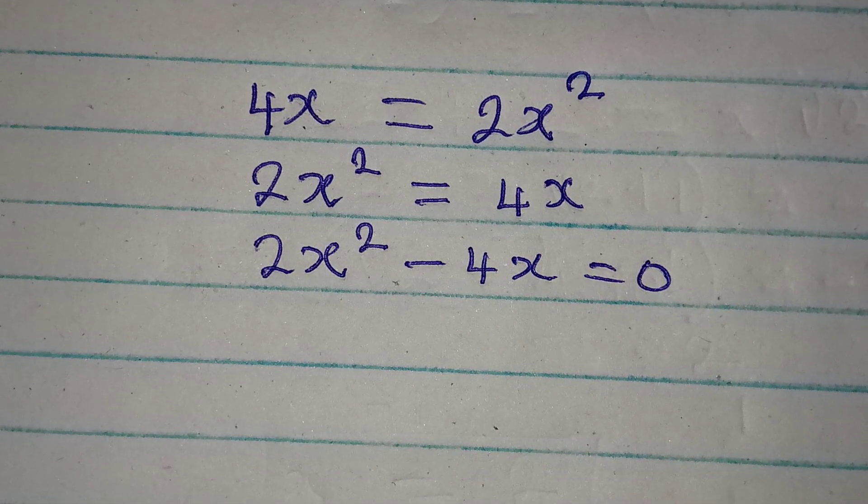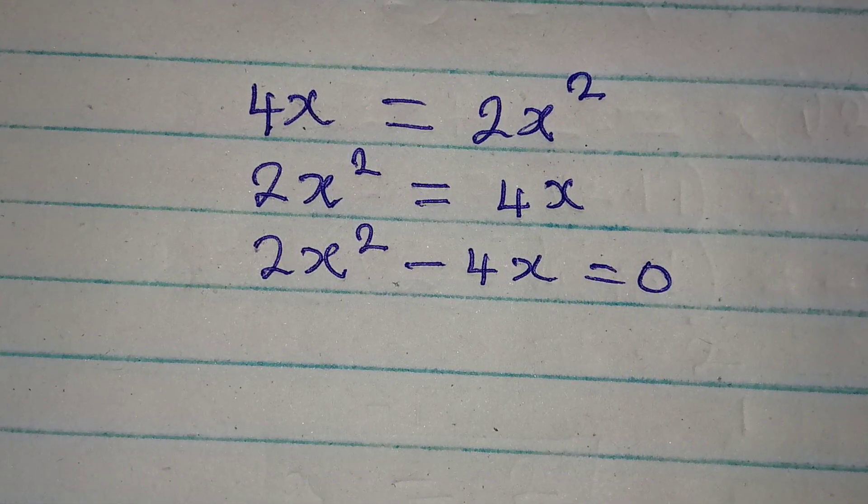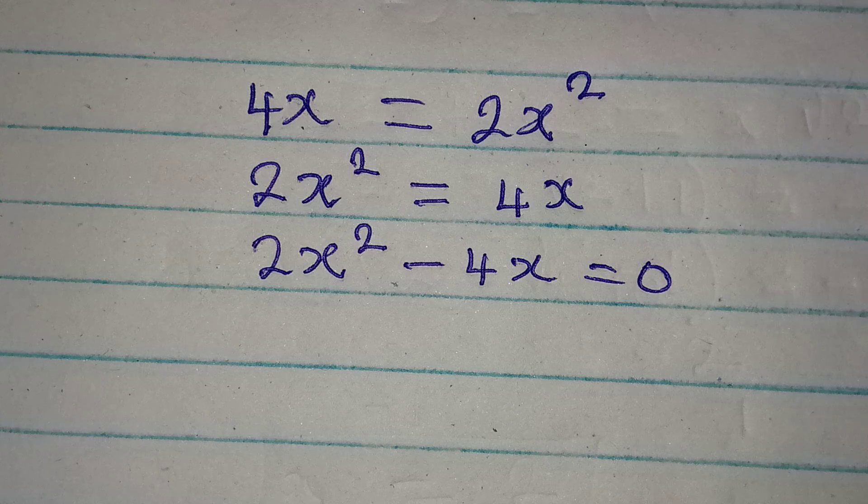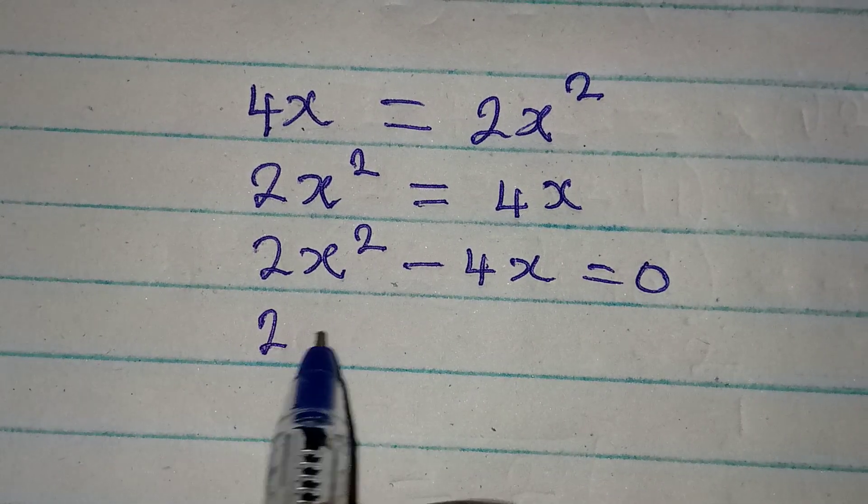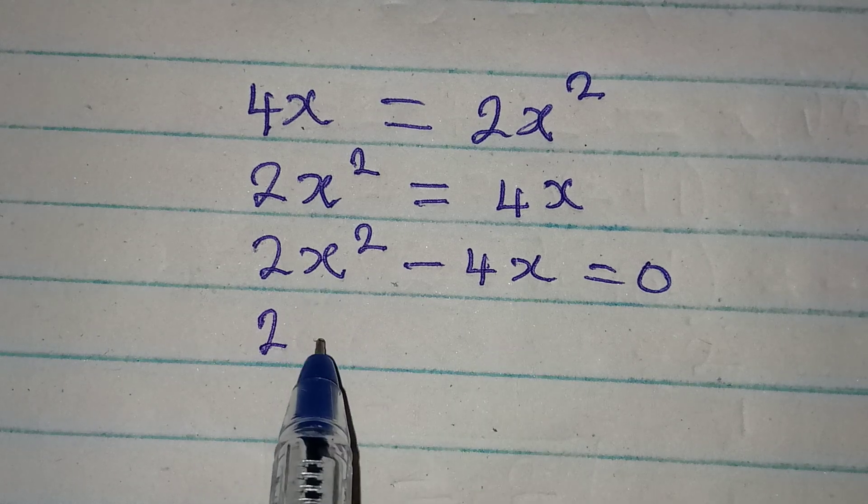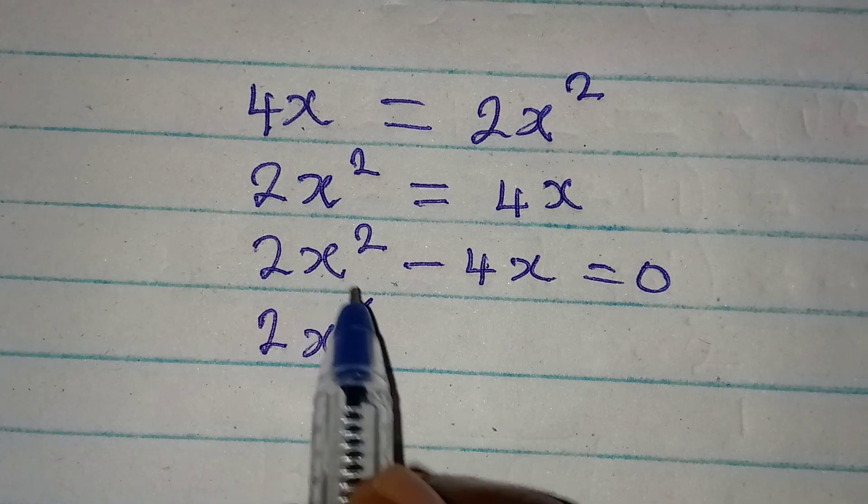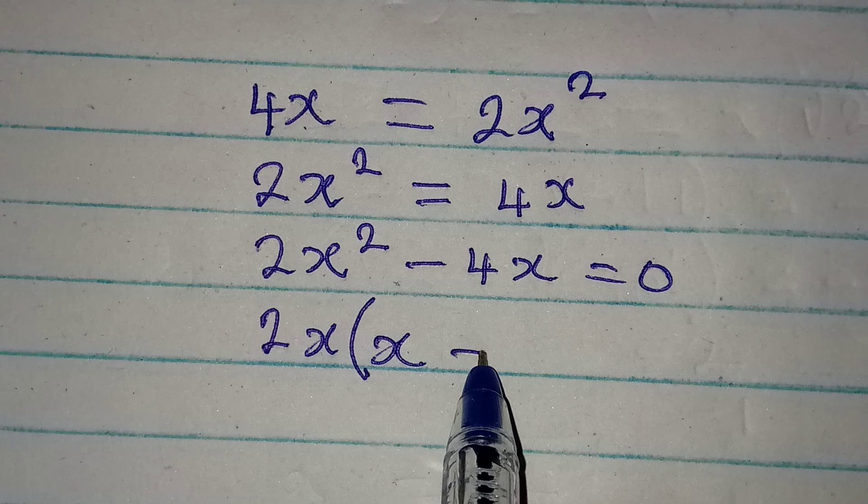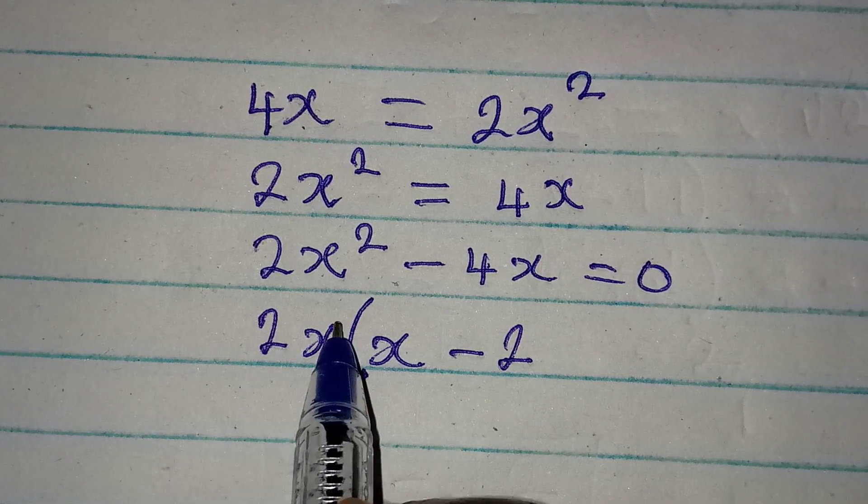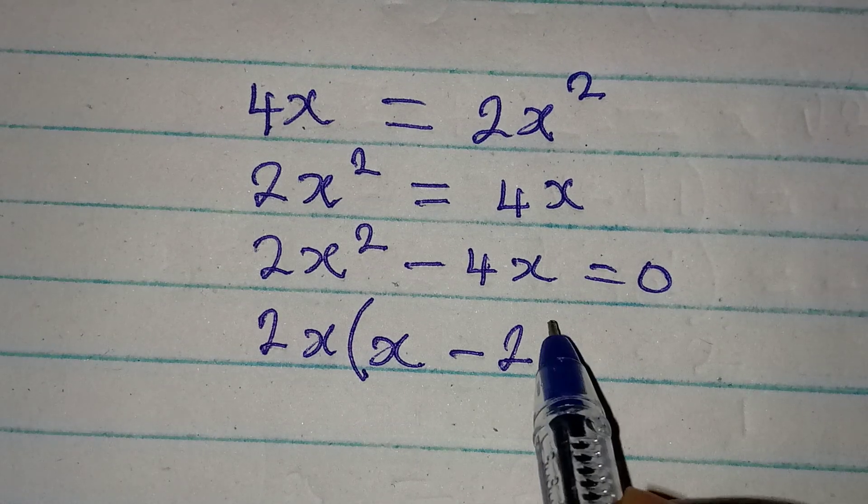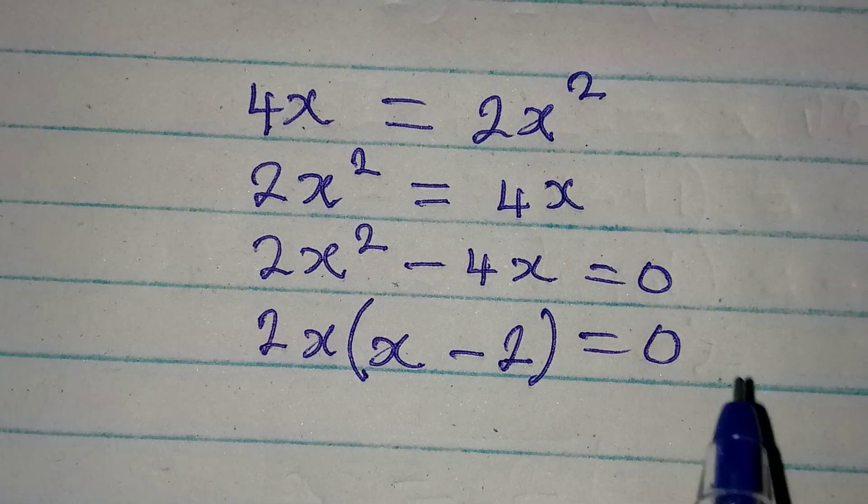Now we have a quadratic equation that we can solve by factorization. 2 is here, it can be found over there, so bring out your 2x. Here we have 1x minus 2, then x will cancel itself from there, so the whole of this would be equal to 0.